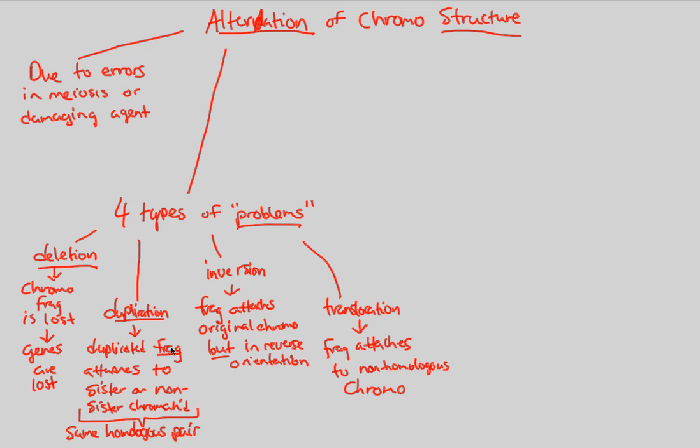Fragment attaches to non-homologous chromosome. In duplication, this is all within chromosome 1. In translocation, this fragment attaching is not just within chromosome 1, but it could be chromosome 1 to chromosome 5. A piece of chromosome 1 goes to chromosome 5. That's translocation. Duplication is a piece of chromosome 1 going to a non-sister chromatid still within chromosome 1. You should be able to understand those differences very clearly based off of our discussion in meiosis about sister and non-sister and homologous and non-homologous.